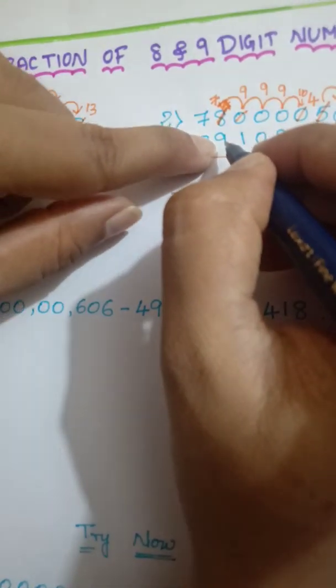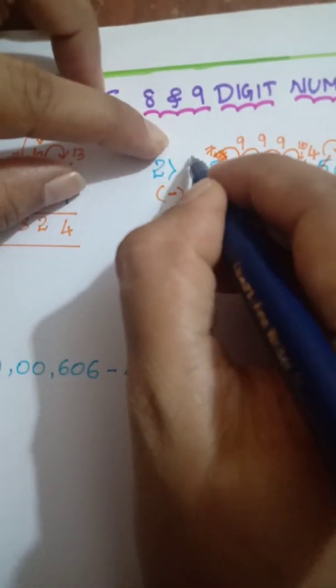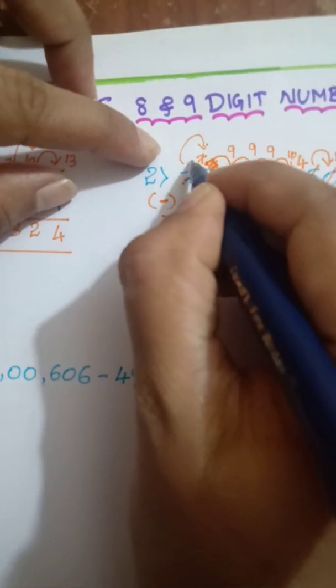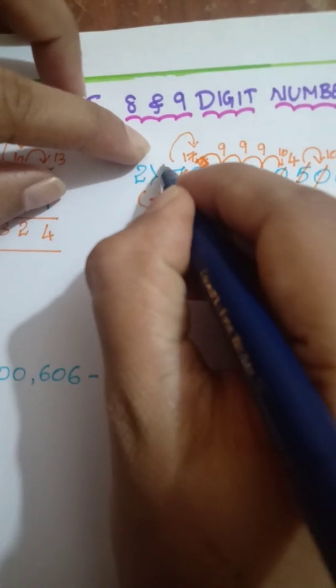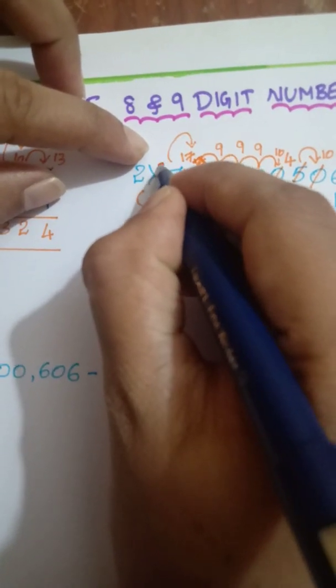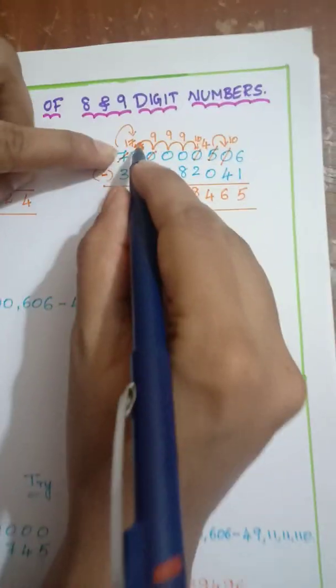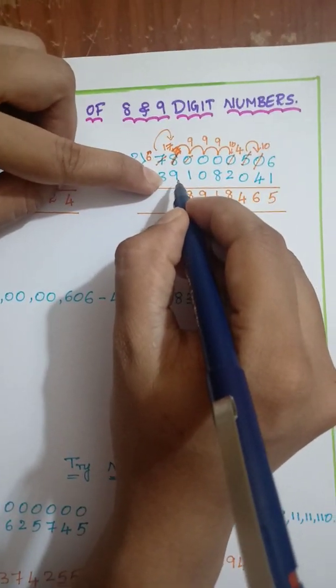7 minus 9. 9 is greater. Yes. So what we have to do? We have to take borrow from here. So 7 will become 17. Here 7 will become how much? 6.